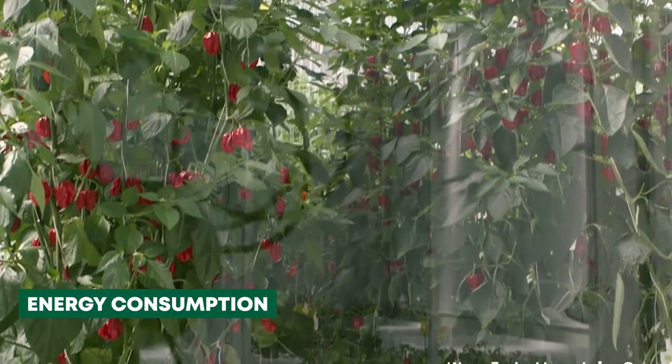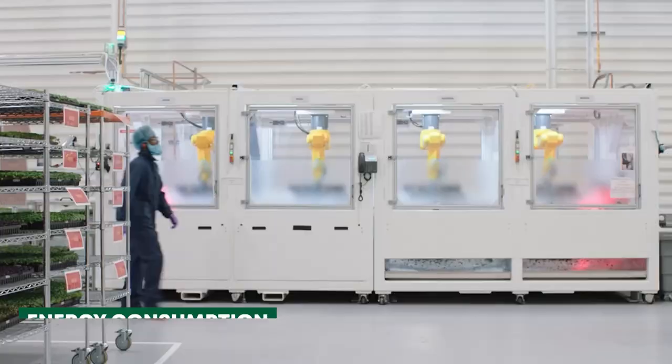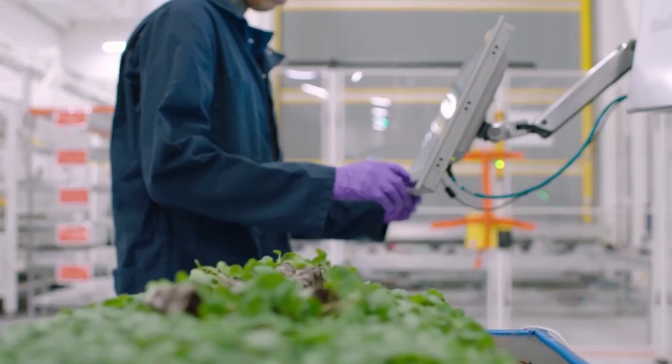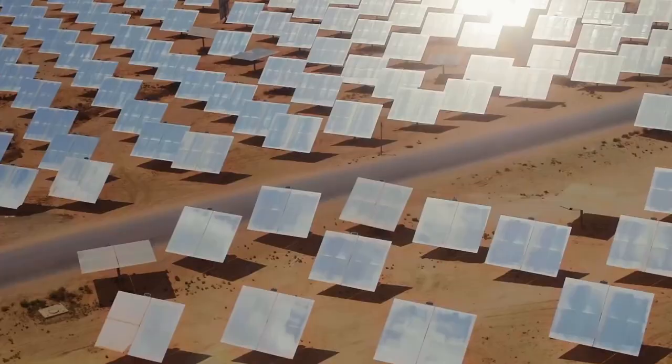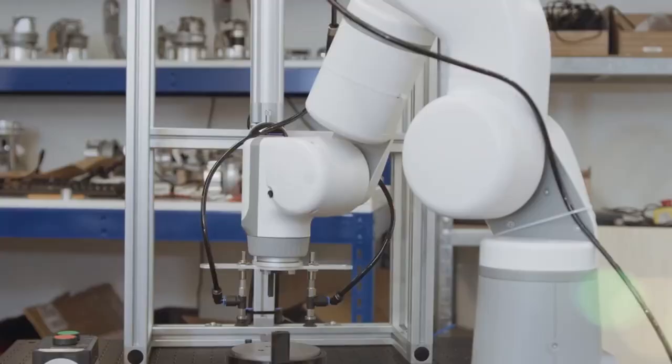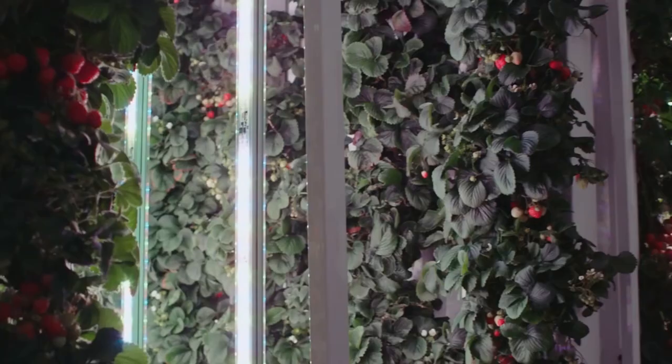Energy consumption: Vertical farming often relies on artificial lighting and climate control systems, resulting in significant energy consumption. In some cases, the cost of energy outweighed the benefits of increased crop yields. Overcoming this challenge requires advancements in energy-efficient technologies and renewable energy integration.